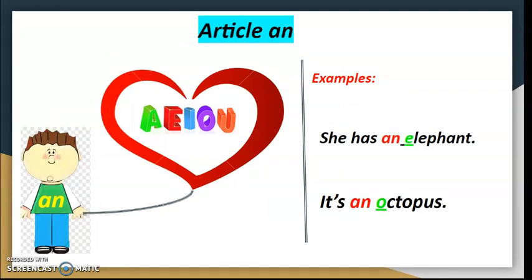Article An likes to hang out with nouns that begin with vowels. For example: she has an elephant, it's an octopus. 'Elephant' and 'octopus' both begin with a vowel.